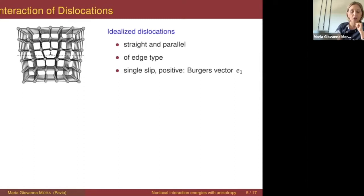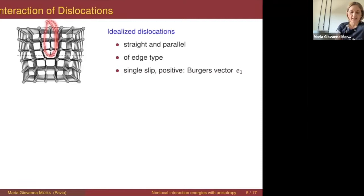Here is an example of a dislocation of edge type. You have an atomic lattice with some distortion, and the distortion is due to some extra amount of atoms — more precisely, an extra half-plane of atoms that produces a local distortion of the lattice.